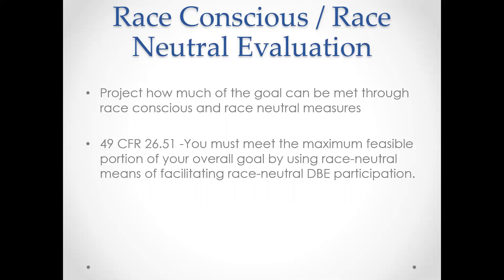Once you have the overall goal set, you determine how much of it you can meet through race-conscious or race-neutral measures. Race-conscious would be a project-specific goal — for example, if a project had a 6% DBE goal and contractors didn't meet it when submitting their bid, the bid would go to the next bidder who did meet it. Most of our work is actually race-neutral, which includes programs that help small businesses — such as small project sizes that DBEs or small firms can bid as primes, or training on how to bid. The CFR encourages meeting as much of your goals as possible through race-neutral measures.